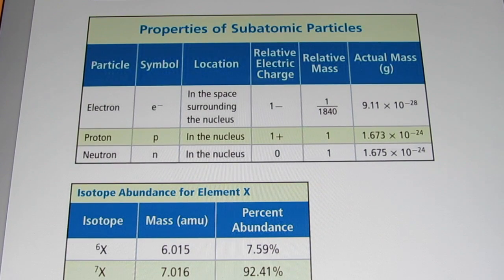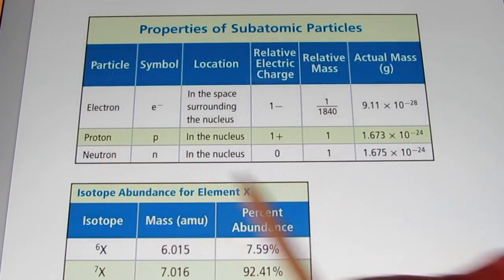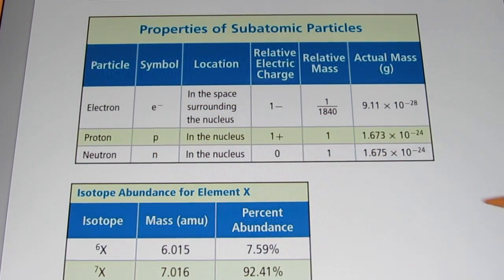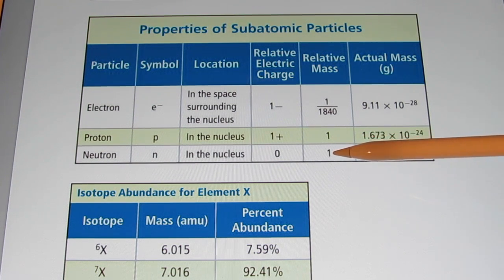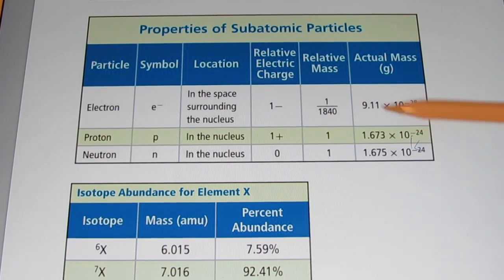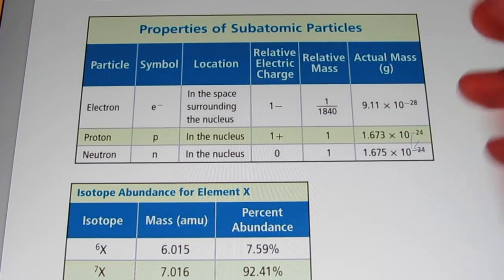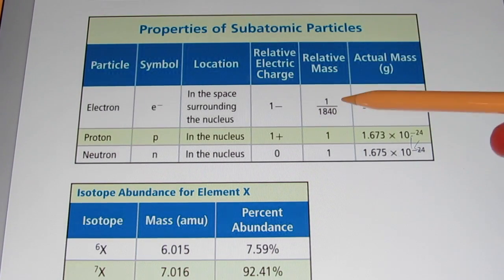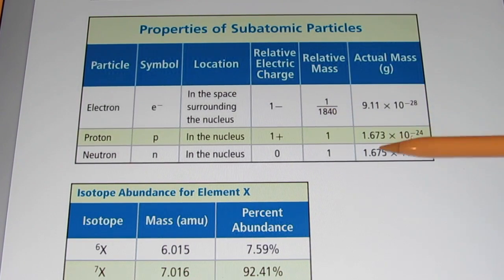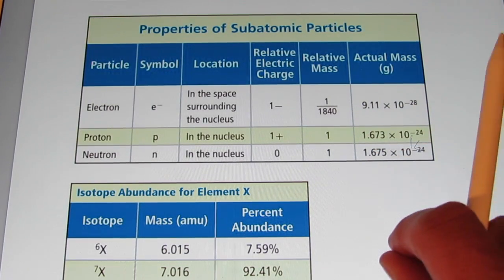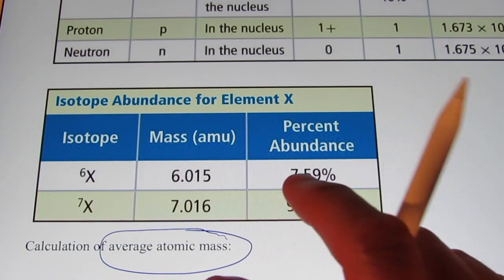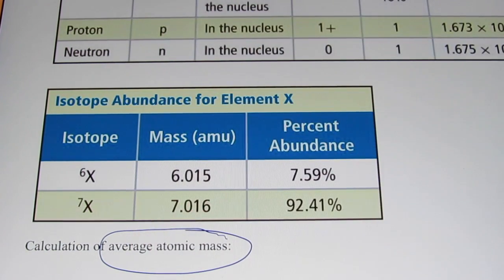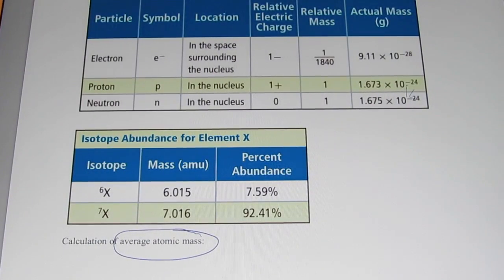There's a summary of the properties of the subatomic particles — go ahead and review this. Make sure you know their symbols and their relative masses compared to each other. If a proton has a mass of 1, a neutron has practically the same mass. However, electrons are 1,837 times smaller — rounded off to 1,840 — so an electron is 1/1,840th the mass of a proton. Next time, we're going to calculate average atomic mass — that decimal number written below the symbol of the element on the periodic table. Thanks for being with me. Bye-bye.